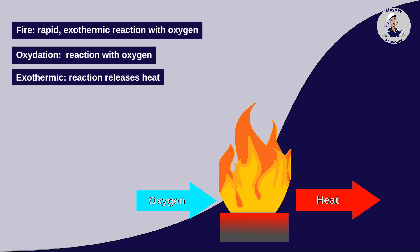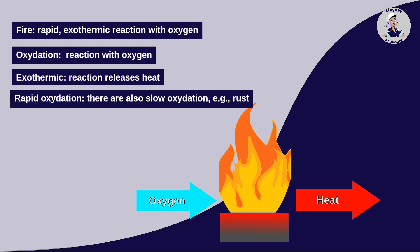Exothermic means that heat is released during the reaction. We only speak of combustion or fire in the case of rapid oxidations. There are also slow oxidations, for example, the process of iron rusting.